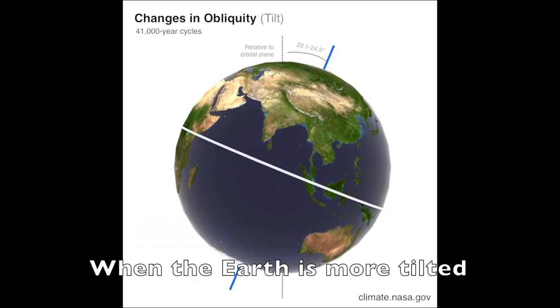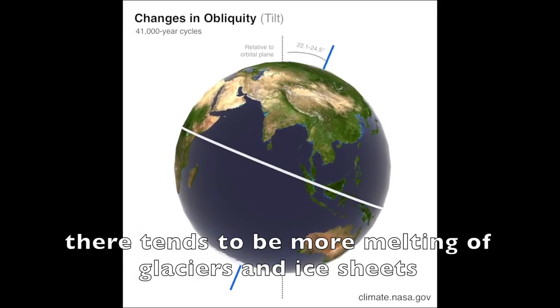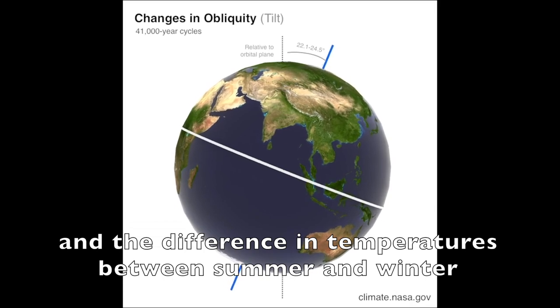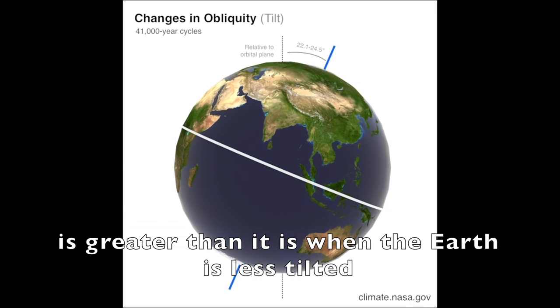When the Earth is more tilted, there tends to be more melting of glaciers and ice sheets, and the difference in temperatures between summer and winter is greater than it is when the Earth is less tilted.